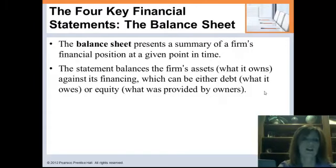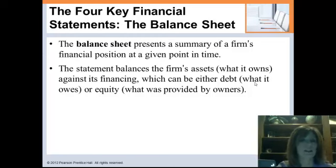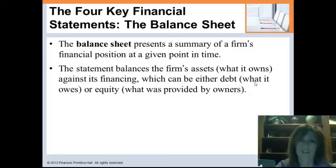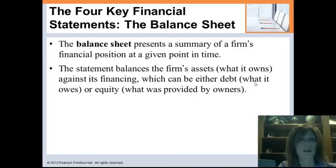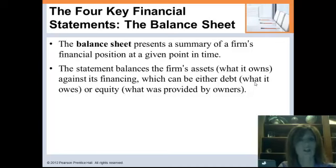The balance sheet is a snapshot of the firm's assets, liabilities, and equity at any given point in time. Remember the basic balance sheet equation from MBA 533: assets equals liabilities plus equity. Assets are the things that we own, liabilities are the debt, and equity is the ownership in the company. Our assets have to equal how we got them — either by borrowing money or by putting in money ourselves as owners. Think about your balance sheet as your house: worth $100,000, with a $40,000 mortgage, so equity is $60,000.